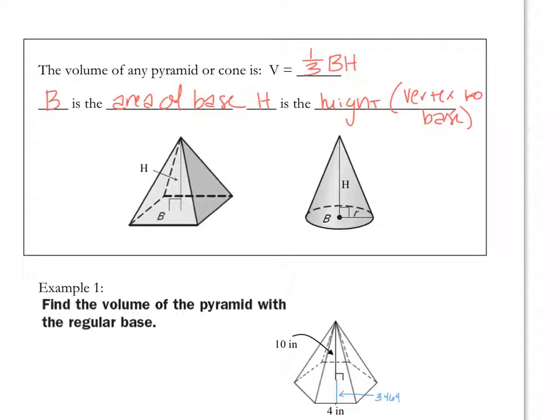We did prisms and cylinders that have two bases. Now, we're going to do one with one base. And that is going to be 1 third B times H. So, it's still going to be the area of your base times the height. And now, this time, we're filling up our shape.